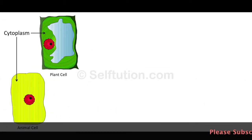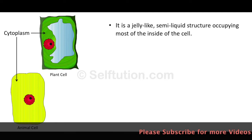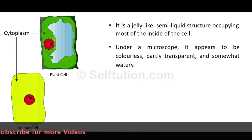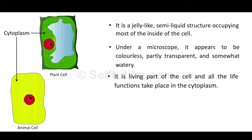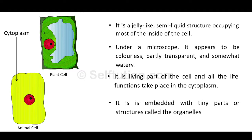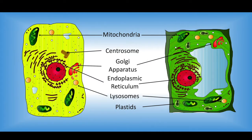The cytoplasm is a jelly-like, semi-liquid structure occupying most of the inside of the cell. It occupies the space between the cell membrane and the nucleus. Under a microscope it appears colorless, partly transparent, and somewhat watery. It is the living part of the cell and all living functions take place in the cytoplasm — all metabolic activities occur in it. The living cytoplasm is always in a state of motion. The cytoplasm is embedded with tiny parts called organelles, meaning 'little organs,' which have definite structure and definite functions in the cell.